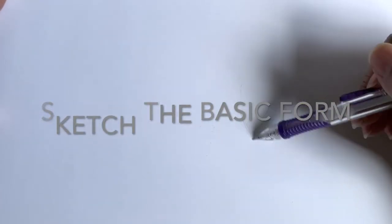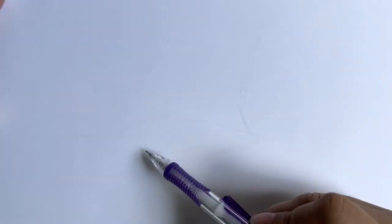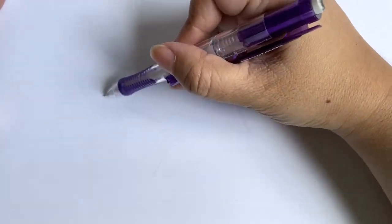When we start, we're going to just basically sketch out the form. All your furniture is going to be basic four forms: cube, cylinder, cone, or a sphere base. And this one is basically based off of the cube.